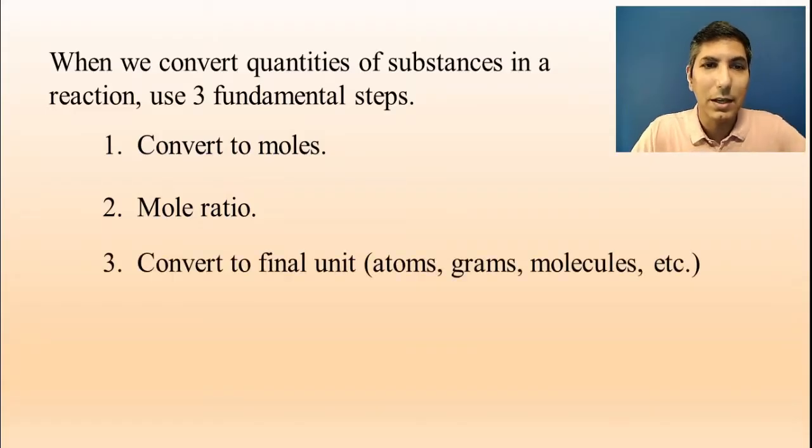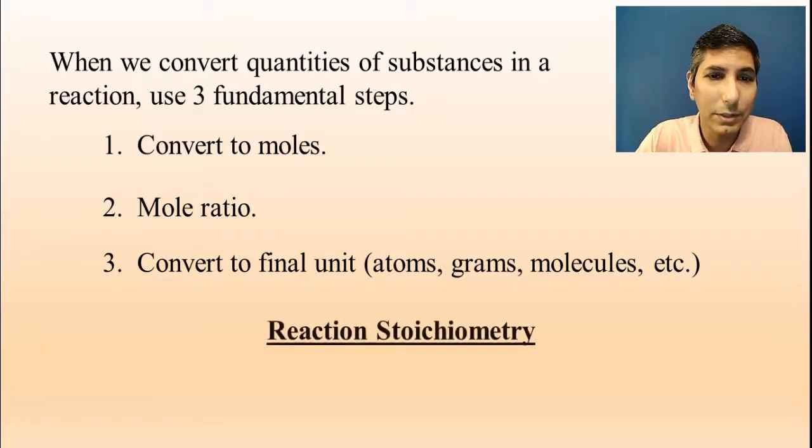The third step is convert to final unit. Usually, the problem asks us to find a value that's not moles, and so perhaps it's grams or molecules or atoms. In that case, we have to convert in this third step and convert to that final unit, whatever it might be. If the final unit that we are being asked for is moles, then we don't have to do this third step, but most of the time we are going to have to do that. This is what I call our three-step process for reaction stoichiometry.